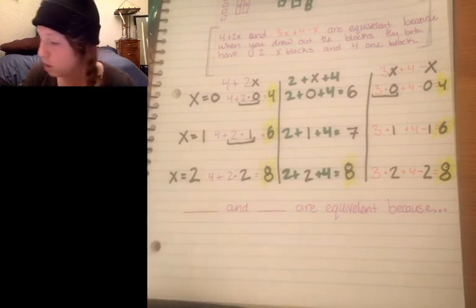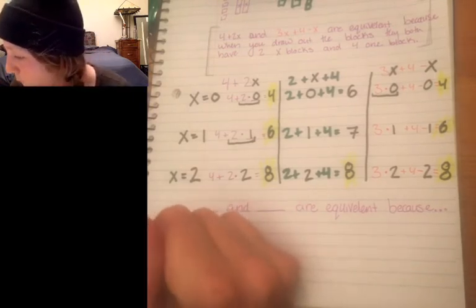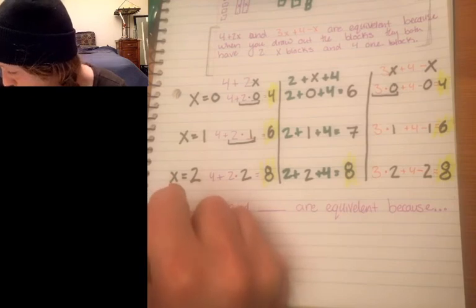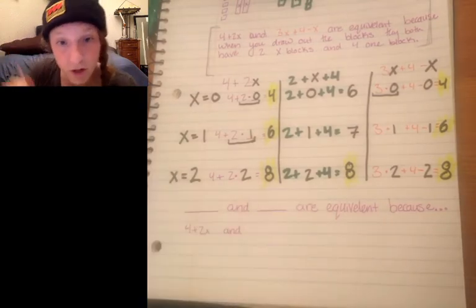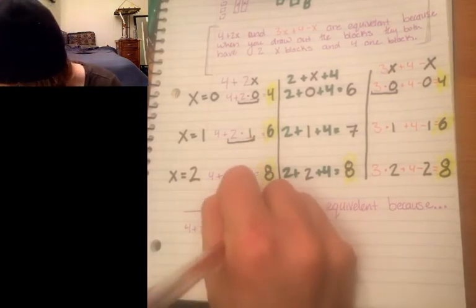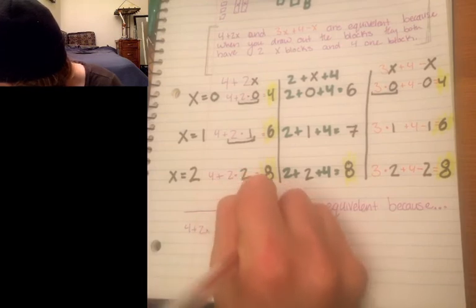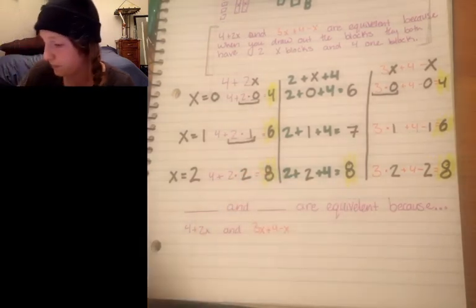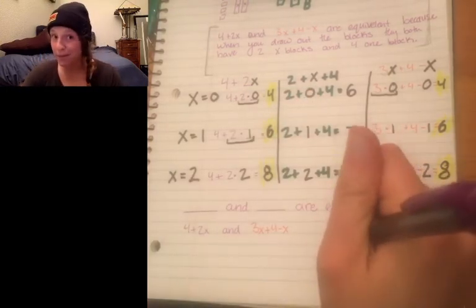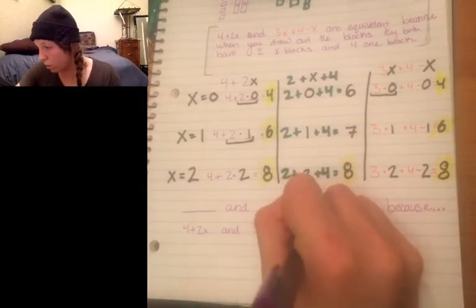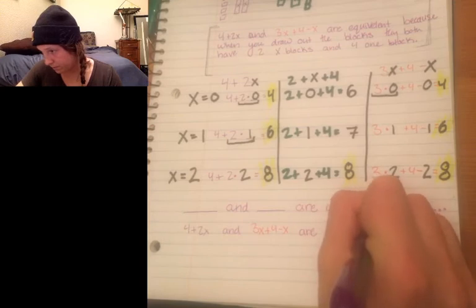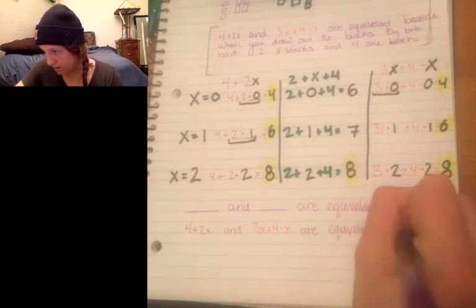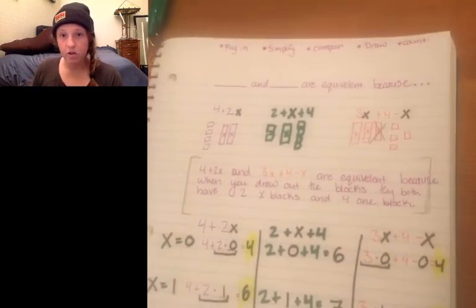So again I'm using the same sentence frame so 4 plus 2x and use my red one just to make sure 3x plus 4 minus x and I like writing with my purple pen the best if you haven't noticed are equivalent because...